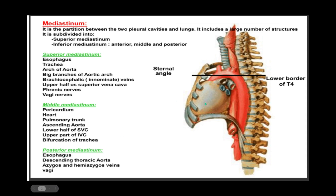In the posterior mediastinum we find the descending thoracic aorta, the esophagus, the azygos and hemiazygos veins, and the sympathetic trunk.